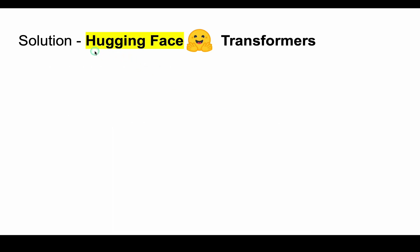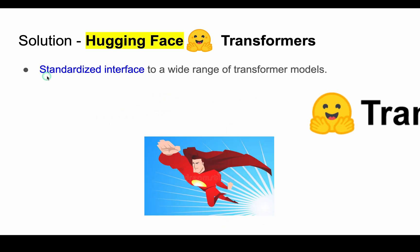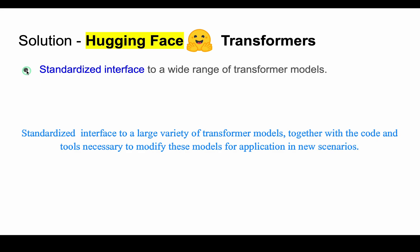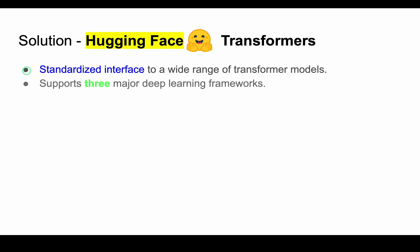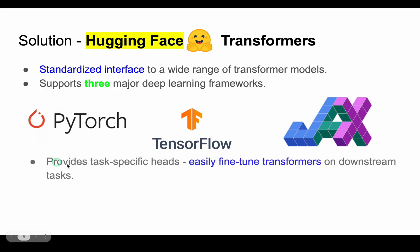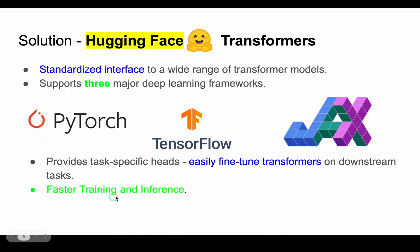The solution is using Hugging Face Transformers. This is where Hugging Face Transformers comes to the NLP practitioner's rescue. It offers a common standardized interface to a large variety of transformer models, together with the code and tools necessary to modify these models for application in different or new scenarios. You may quickly switch between three main deep learning frameworks supported by this library: PyTorch, TensorFlow, and JAX. Furthermore, it has task-specific heads that make it quite simple to adjust transformers for different downstream tasks like text classification, named entity recognition, question answering, etc. This cuts the week-long training and testing of a few models down to only one day.